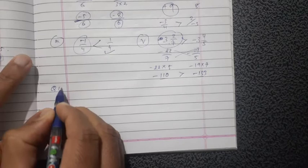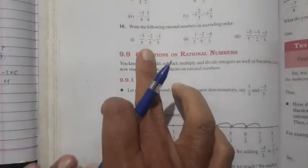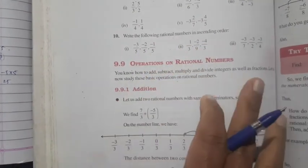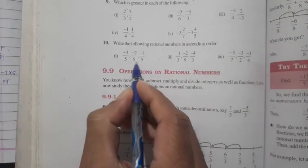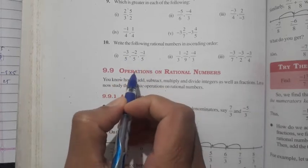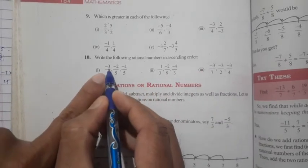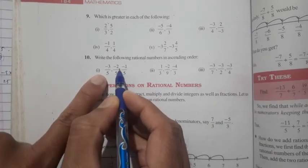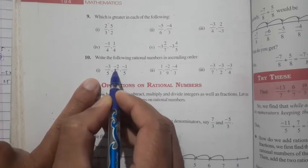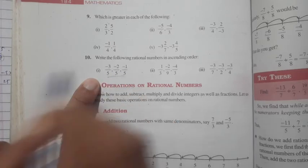Same method in question number 10: write the following rational numbers in ascending order — small to big. When the denominators are the same, directly compare the numerators. In negative numbers, the greater number has a lower value, so minus 3 is lowest, then minus 2, then minus 1. That sequence is already in ascending order.